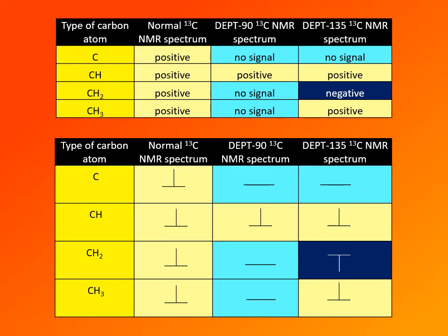CH carbons, those with only one hydrogen, appear in all three spectra and give positive signals in all three. CH2 carbons (methylene carbons) appear in the normal spectrum and in DEPT-135 as a negative signal, but give no signal in DEPT-90. CH3 carbons (methyl carbons) appear in the normal spectrum and in DEPT-135 as positive signals, and give no signal in DEPT-90. This is summarized in tables showing which signals are positive, negative, or absent.